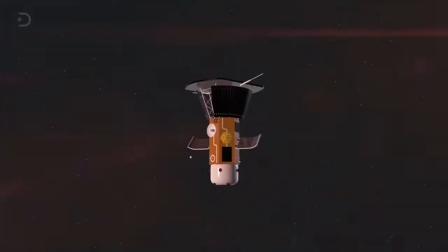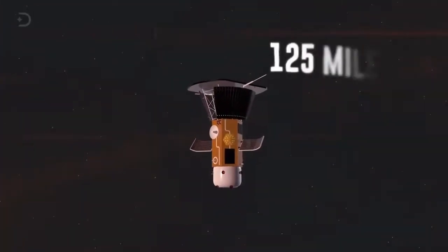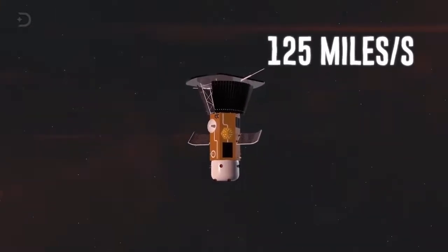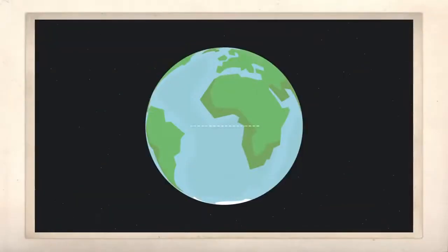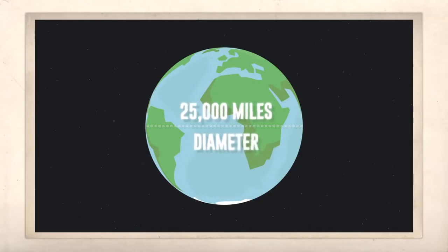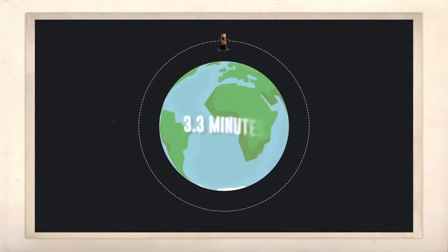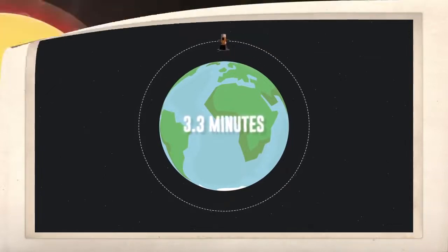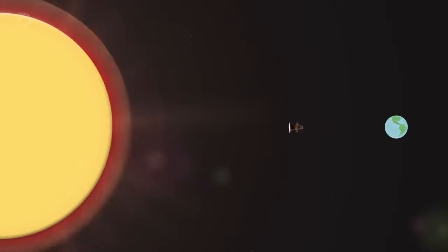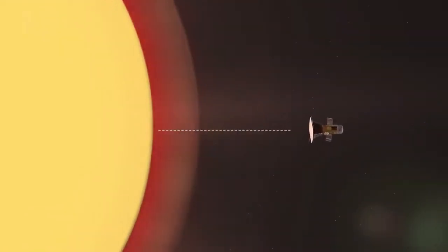The Parker solar probe will end up reaching speeds of 125 miles per second. The circumference of the Earth is almost 25,000 miles in diameter. This means that if the Parker probe were in orbit around the Earth, it would make one full trip in just 3.3 minutes. To give you an idea of just how close the probe is going to get to the Sun, if our Earth was at one end of a yardstick and the Sun on the other, the Parker solar probe will come within 4 inches of the solar surface.